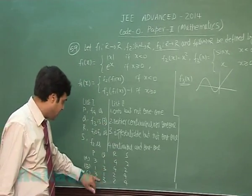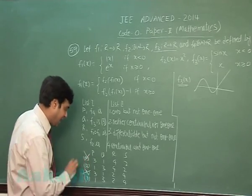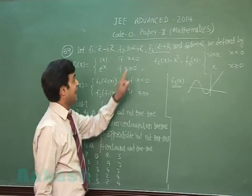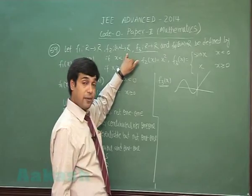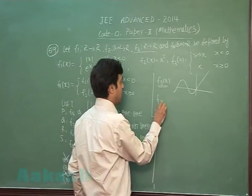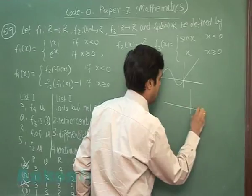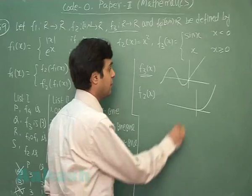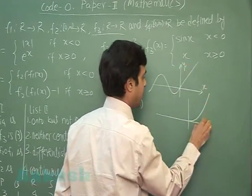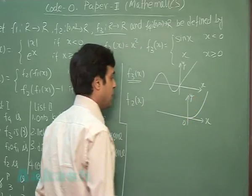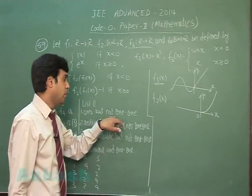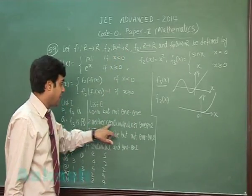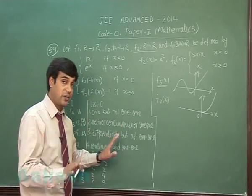So for Q the correct code is 3. For Q the correct code is 3, that is possibilities for B and D. A and C are eliminated. f2 is x square for 0 to infinity to R. This part is f2, correct. So again reading it: onto but not one-one, this is not onto because codomain is R. Neither continuous: sorry, it is continuous as well, so it is not the term.